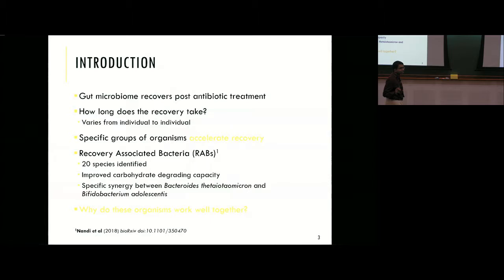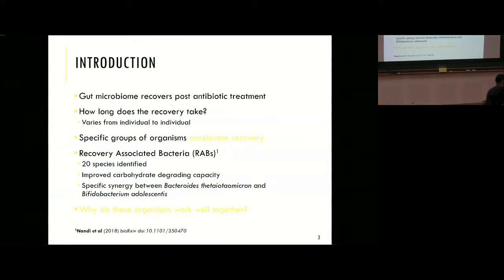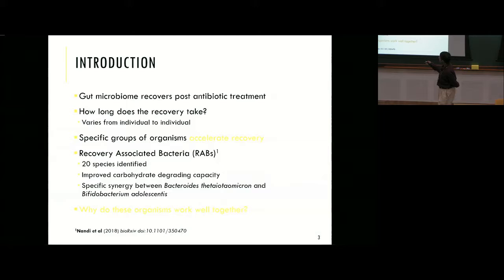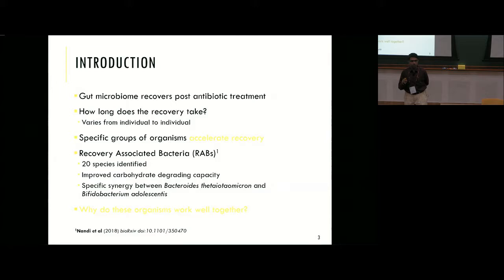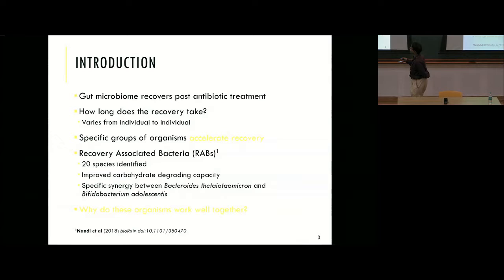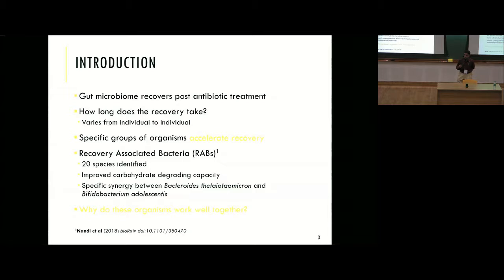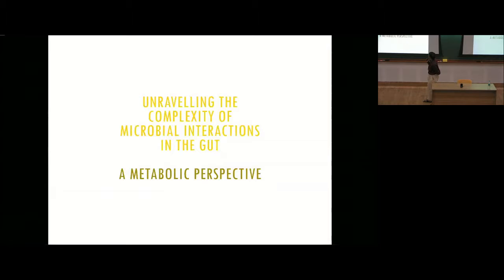There are specific groups of organisms that accelerate this recovery, which is quite interesting. Can you start having probiotics of this sort that induce these effects? It turned out that a group of people identified about 20 different species — sort of keystone species — for recovery or rapid recovery of the gut microbiome profile. They particularly noted some synergy between Bacteroides thetaiotaomicron and Bifidobacterium adolescentis. Bifidobacterium is a very favorite organism for most people working on the gut because it is a crucial component of the infant gut microbiome, with very interesting pathways like the bifid shunt.